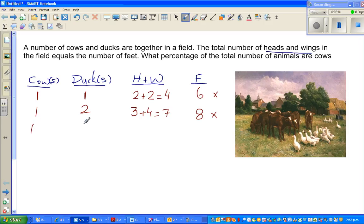So I'll see what happens if you've got one cow and three duck. So you've got how many heads? One plus three. So you've got four heads. And how many wings? Six wings. So that is ten. And how many feet? Four feet plus six feet? That's ten. So this is the right answer.